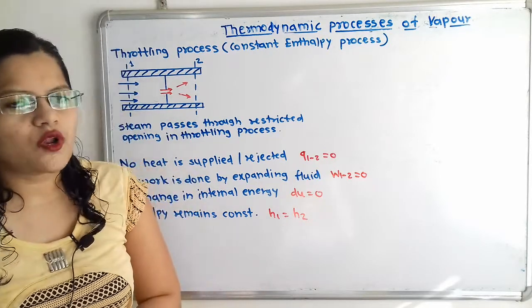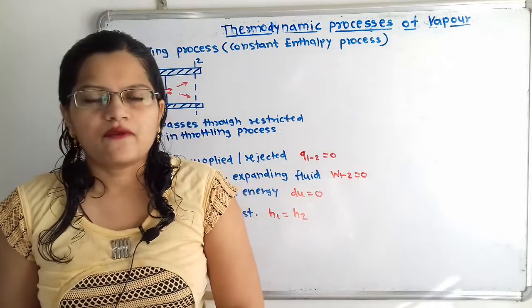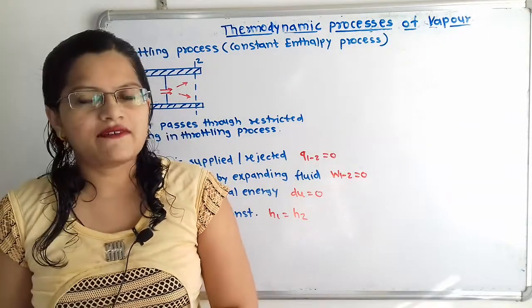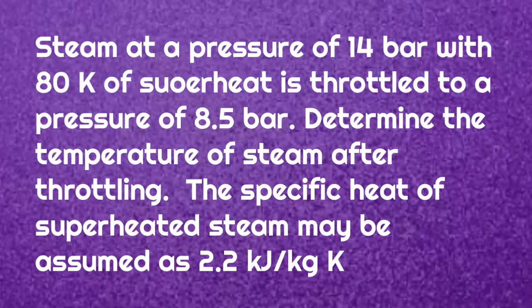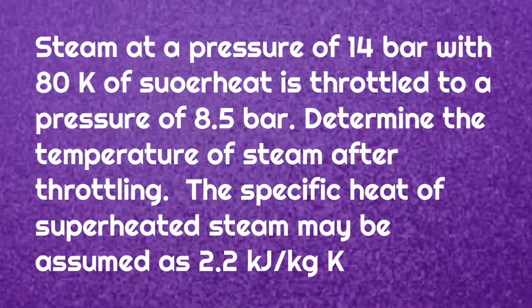We will now solve one problem for the throttling process. Steam at a pressure of 14 bar with 80 Kelvin of superheat is throttled to a pressure of 8.5 bar. Determine the temperature of steam after throttling. The specific heat of superheated steam may be assumed as 2.2 kJ per kg Kelvin.